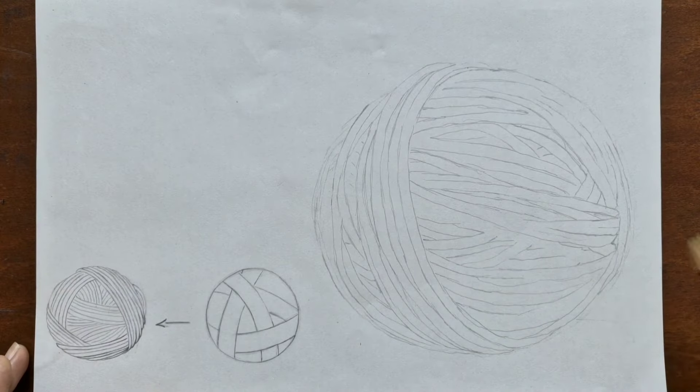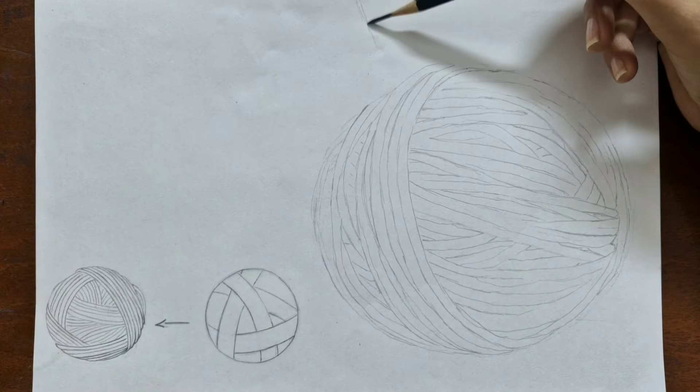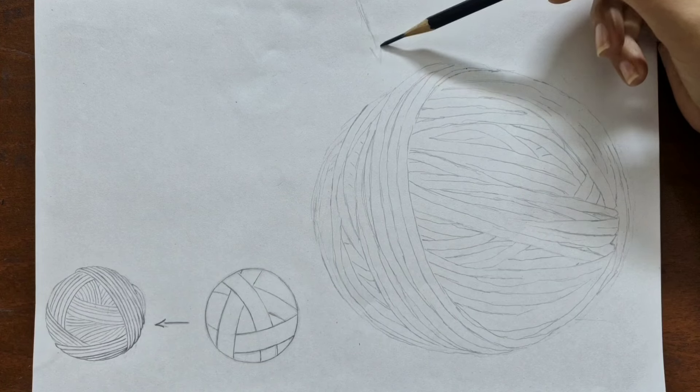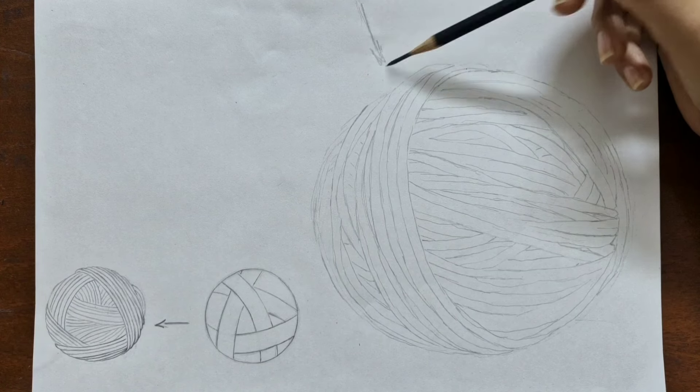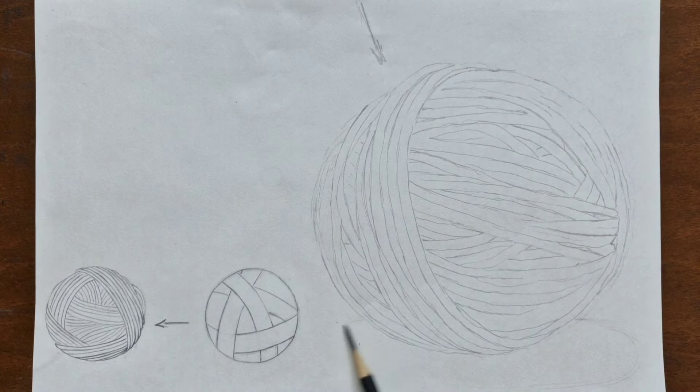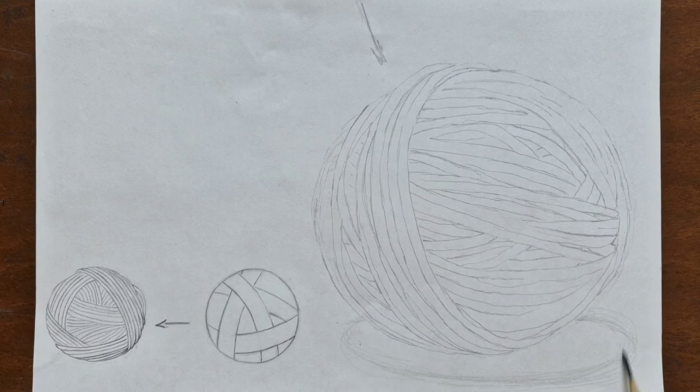Okay, now it's time for some shading. First decide where your light source is coming from. I'm thinking mine will be up at the top kind of tilted to the left. That means the shadow will be cast down on the bottom of my yarn.